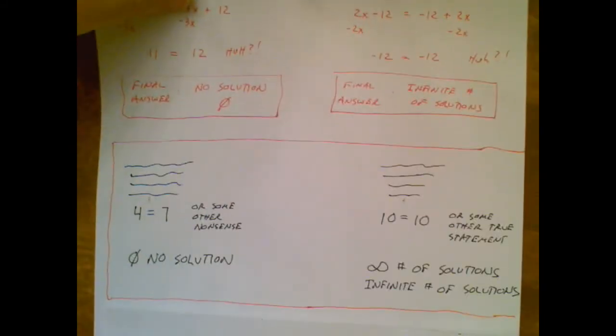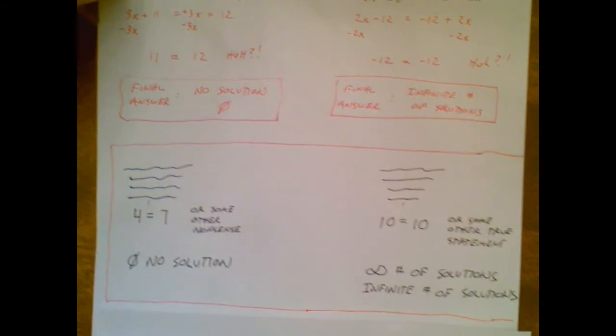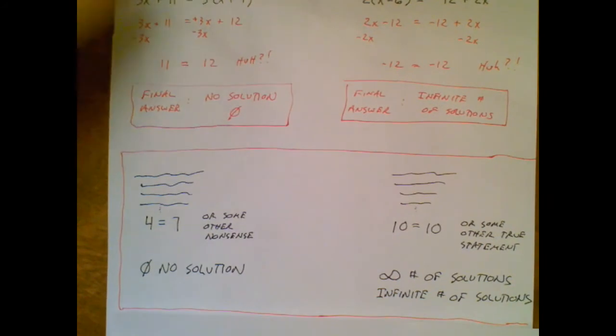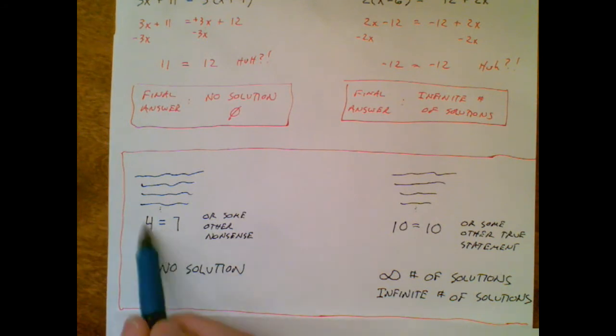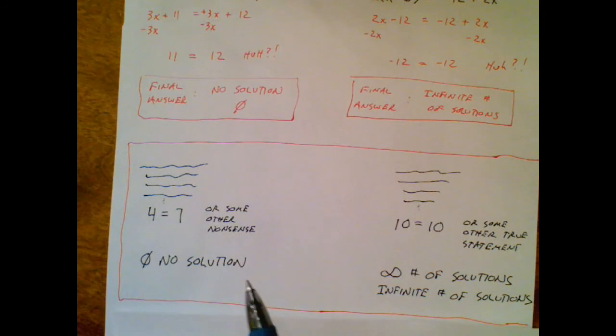So here's what you have to know: if you're minding your own business just solving an equation and you get to a spot where the variable is gone and you're left with just numbers, all you do is ask yourself, is this a true statement or a false statement?